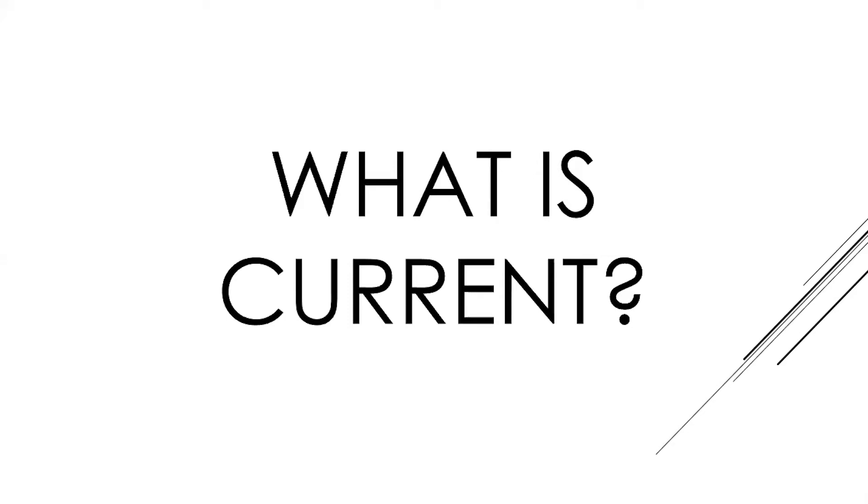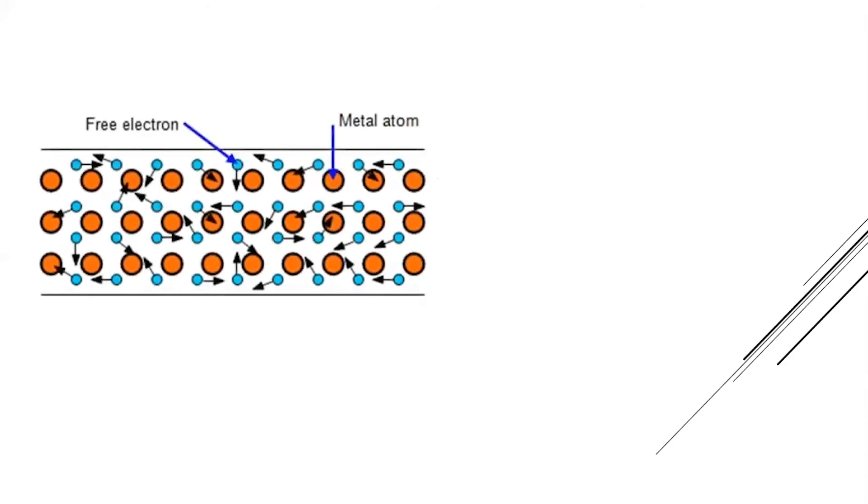So, what happens in a conductor is, this is the situation. Say, we have a conductor which can be any metal. It has free electrons and it has atoms as well. Obviously, the electrons belong to those atoms.